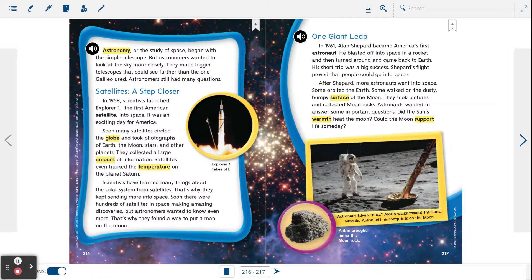One giant leap. In 1961, Alan Shepard became America's first astronaut. He blasted off into a space rocket and then turned around and came back to Earth. His short trip was a big success. Shepard's flight proved that people could go into space.